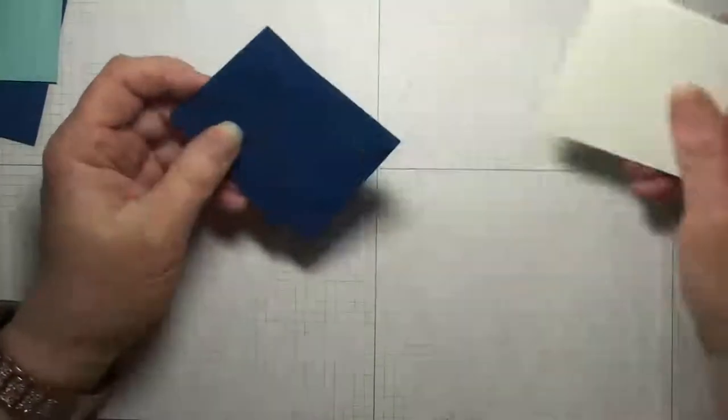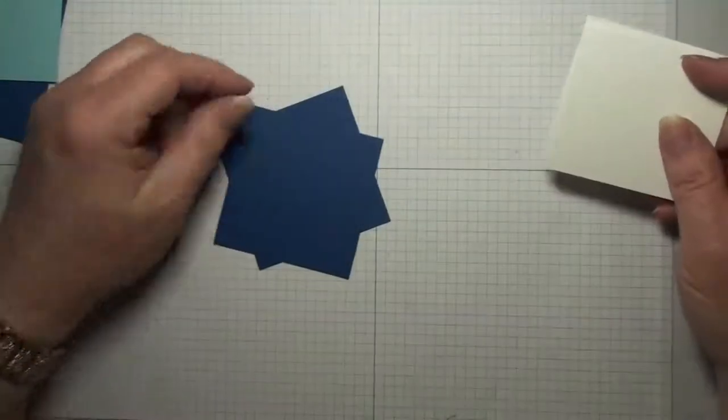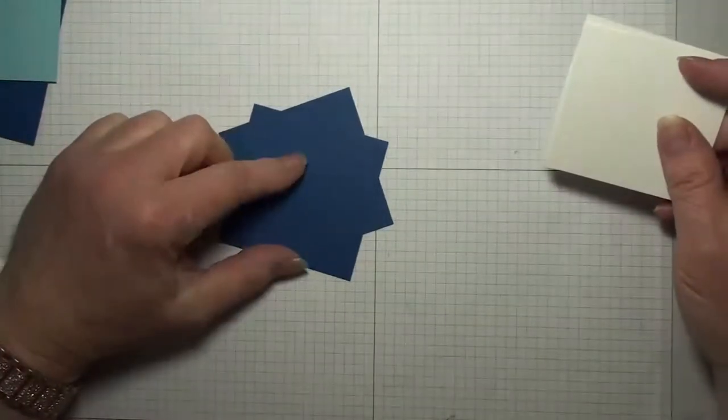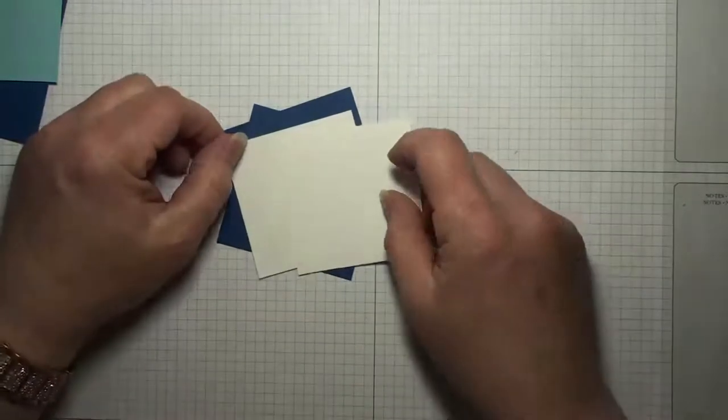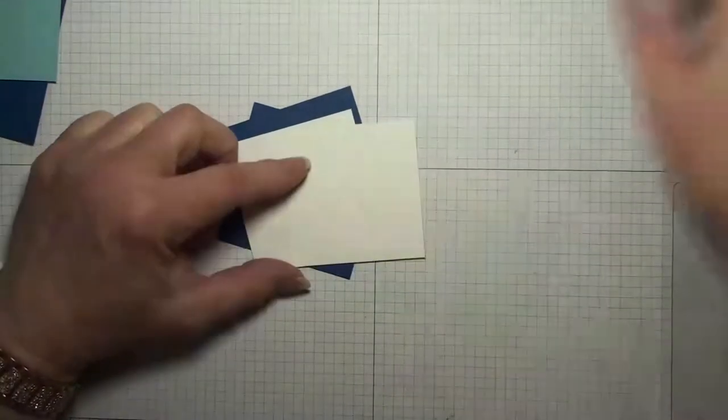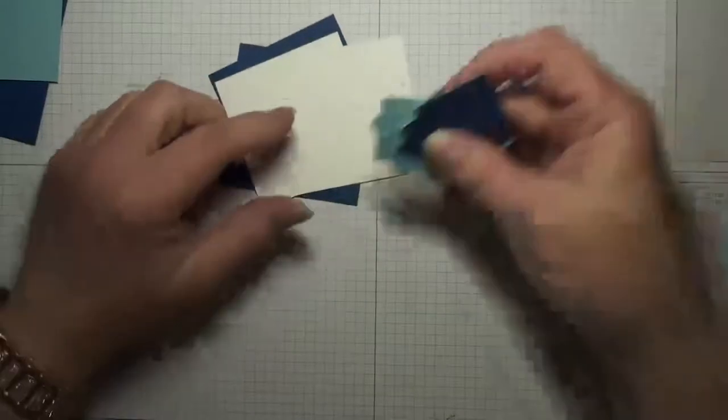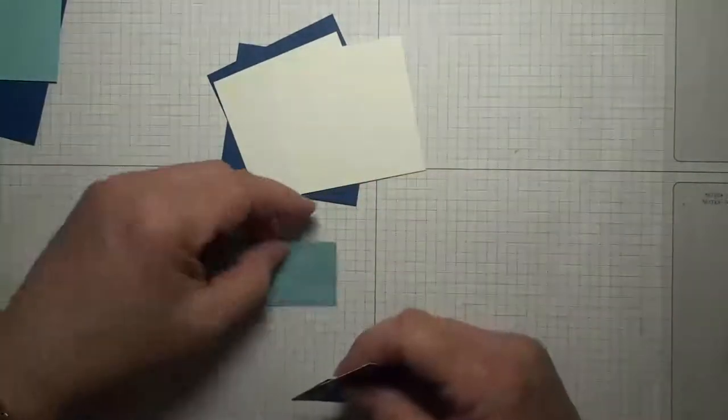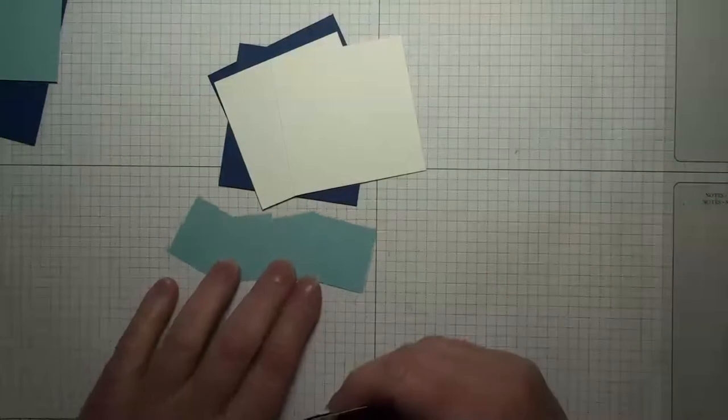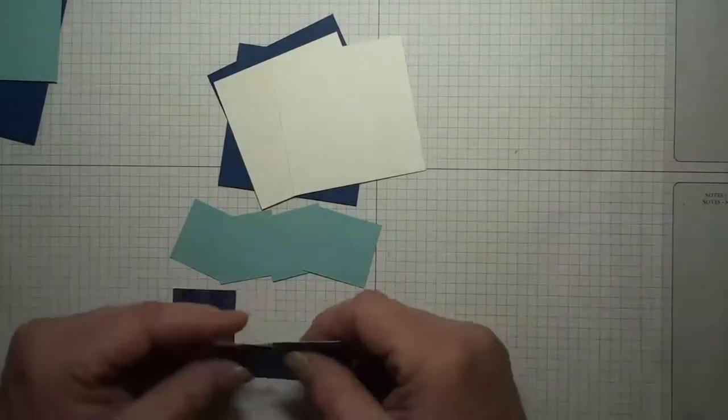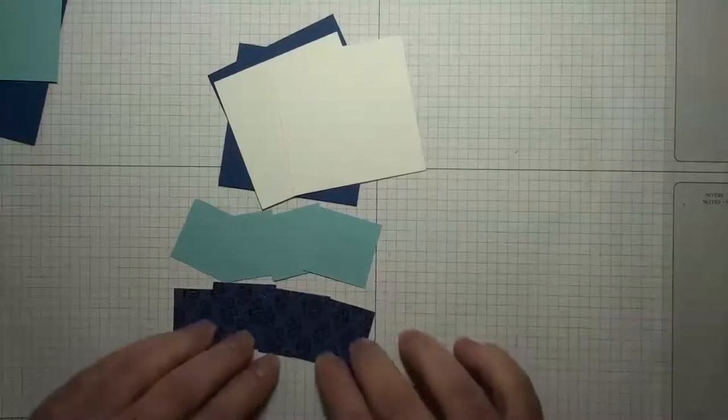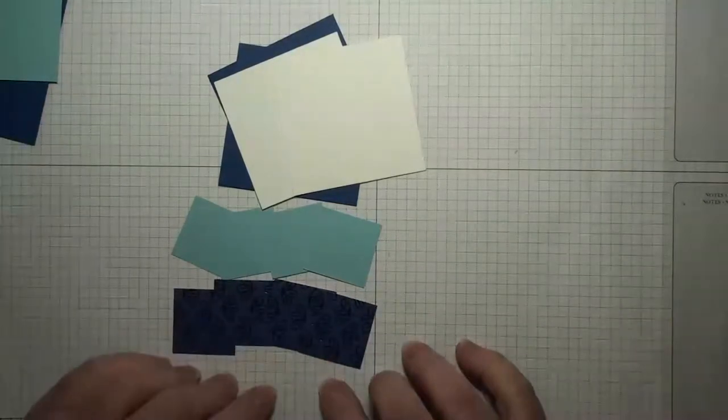Then you need two pieces of cardstock that are two and three quarter inches square and then two pieces of cardstock that are two and five eighths inches square. You need four pieces that are one and a quarter inches squared and then four more pieces of a coordinating that are also one and a quarter inches squared.